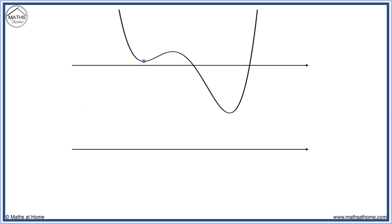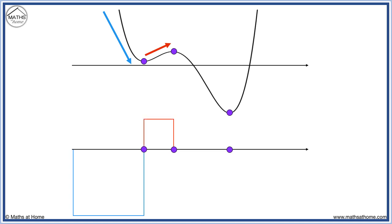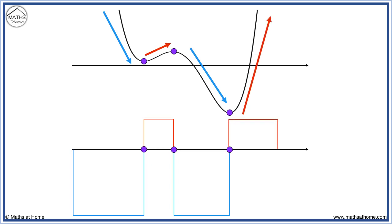We mark the turning points on the axis. We start decreasing, then increase, then decrease, then increase again. Our derivative of this quartic will be a cubic. The derivative starts coming up, and the inflection point is in line with a turning point. We guess at how high up it is placed. Here is another inflection point, so the turning point is in line with it. Here is our derivative graph.